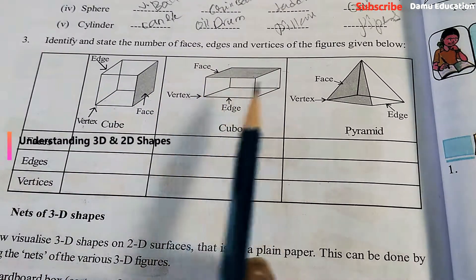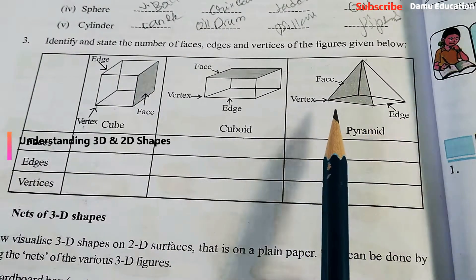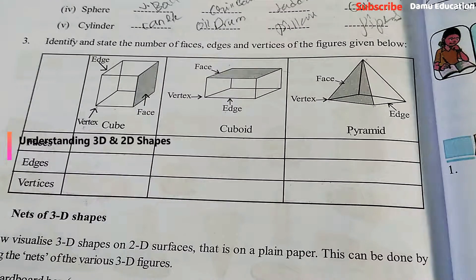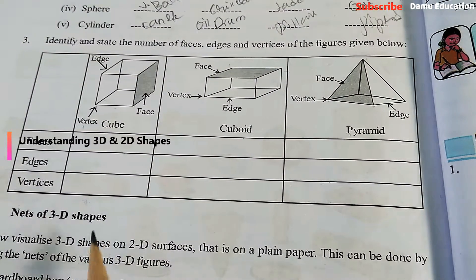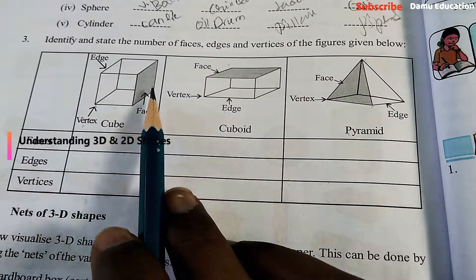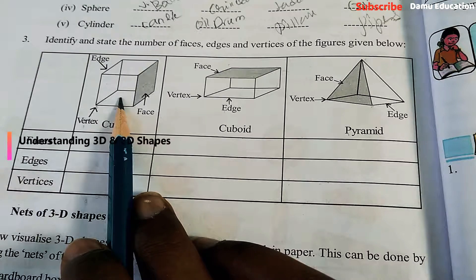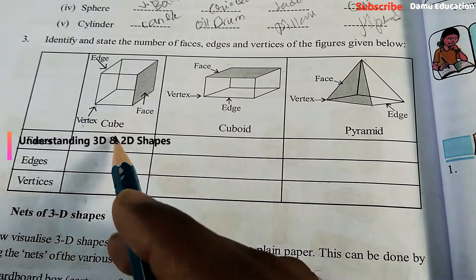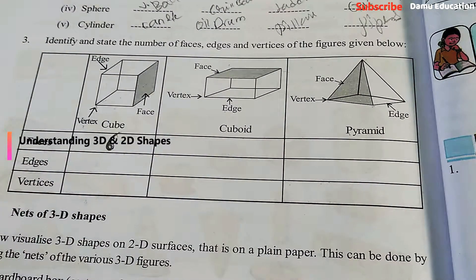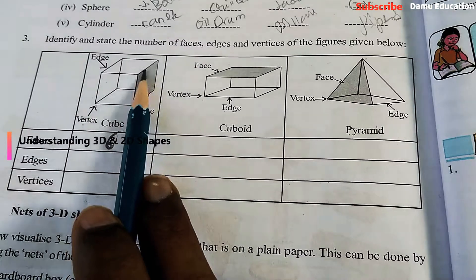For cube, how many faces? One, opposite one is another - two, three, up one, down one - three, four, front and back - five, six. Six faces are there. Then how many edges? Here we'll take this side: one, two, three, four. Opposite side will be four edges: one, two, three, four.